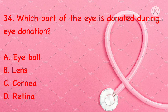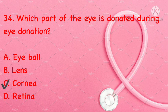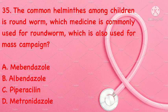Which part of the eye is donated during eye donation? Eyeball, lens, cornea, or retina. Correct answer is C: cornea.